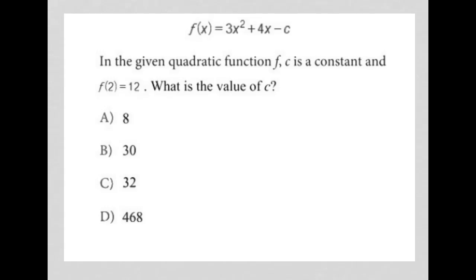This question starts off with this function here. This is a function question. We're told that f of x is equal to 3x squared plus 4x minus c. Obviously, we don't know what c is. The question goes on to say, in the given quadratic function, f, c is a constant, and f of 2 equals 12.